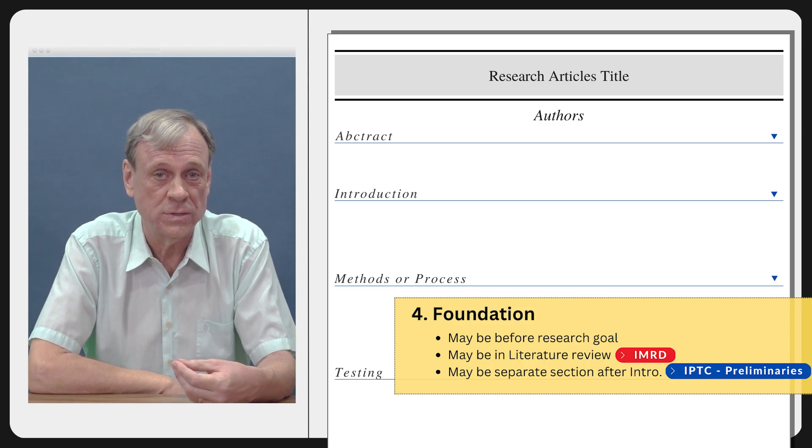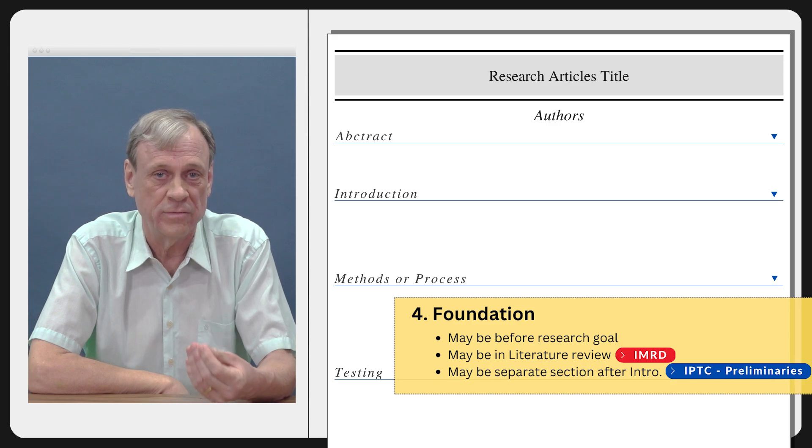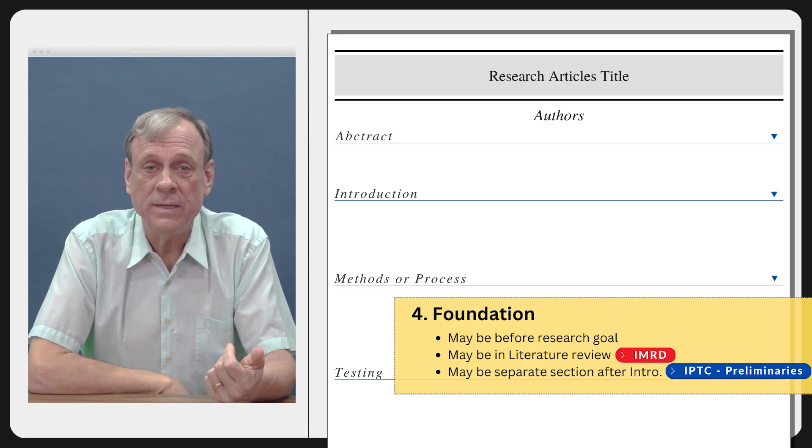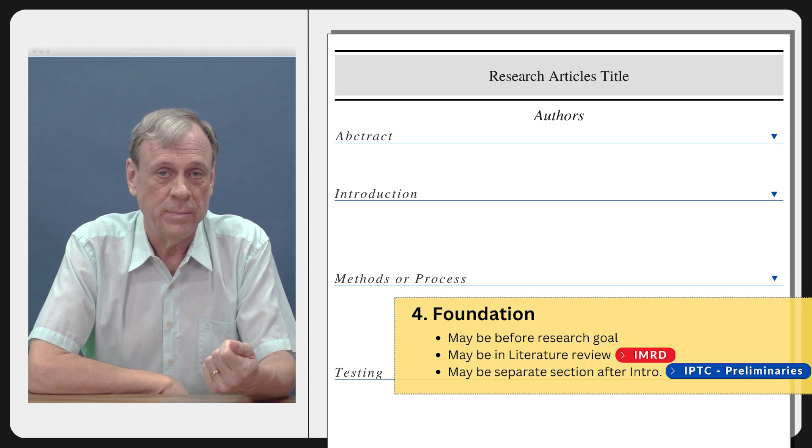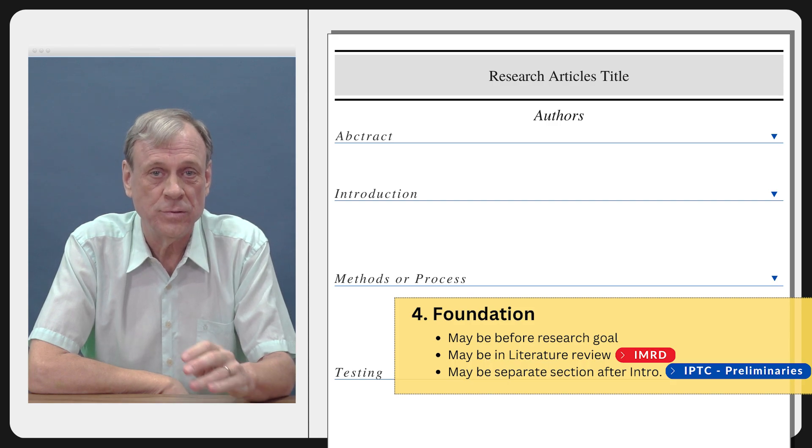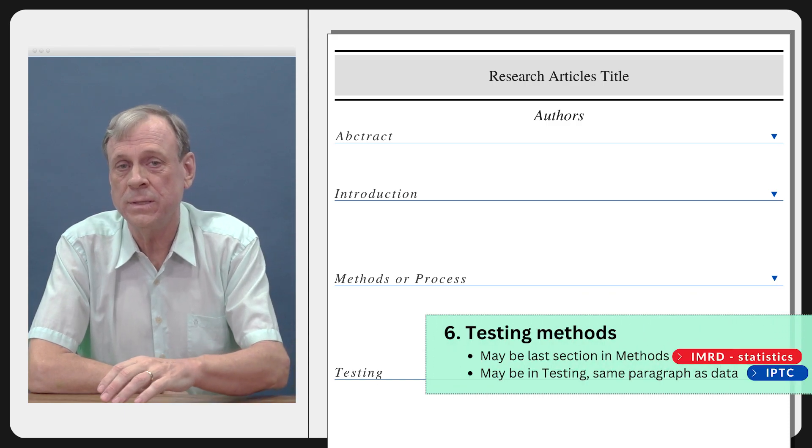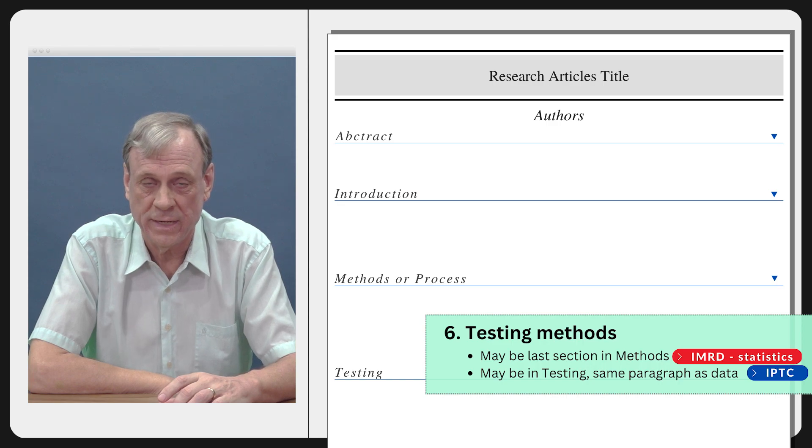They may not state the research goal. Again this is very different from social science where it's very common, almost ubiquitous, to state the theoretical framework that the work is based on. There may be a separate section, it may be found in the literature review, it may be found in a section called perhaps preliminaries after the introduction but before the methods.